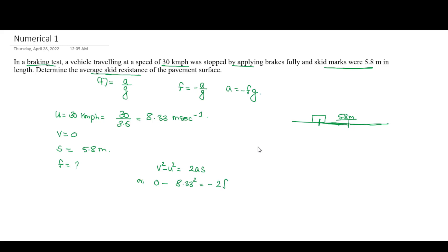Substituting the values: minus 8.33 squared equals minus 2 times f times 9.81 times 5.8. Solving for f, we get a positive value. Dividing through, the skid resistance f equals approximately 0.609, or about 0.611.